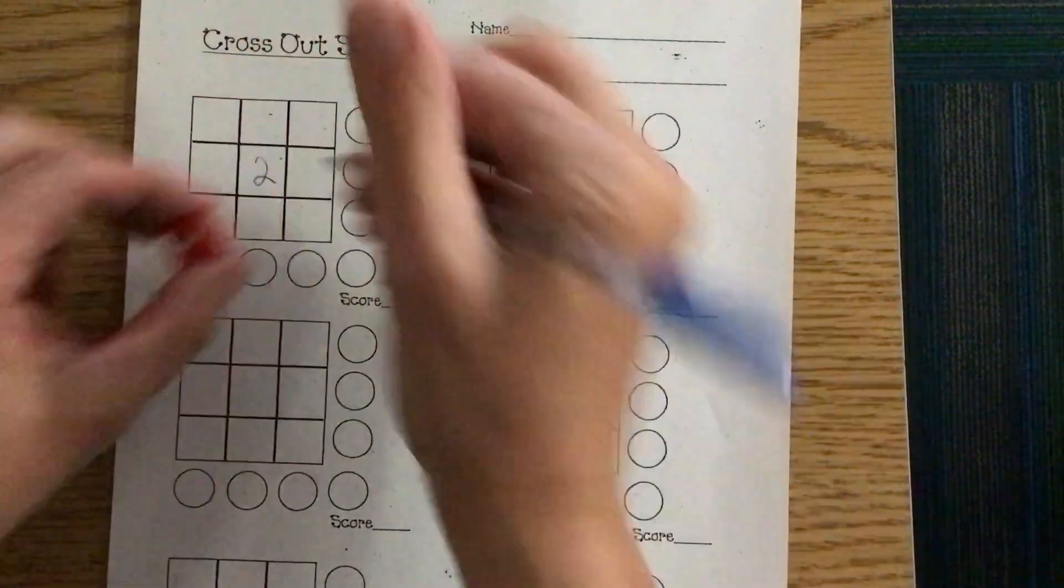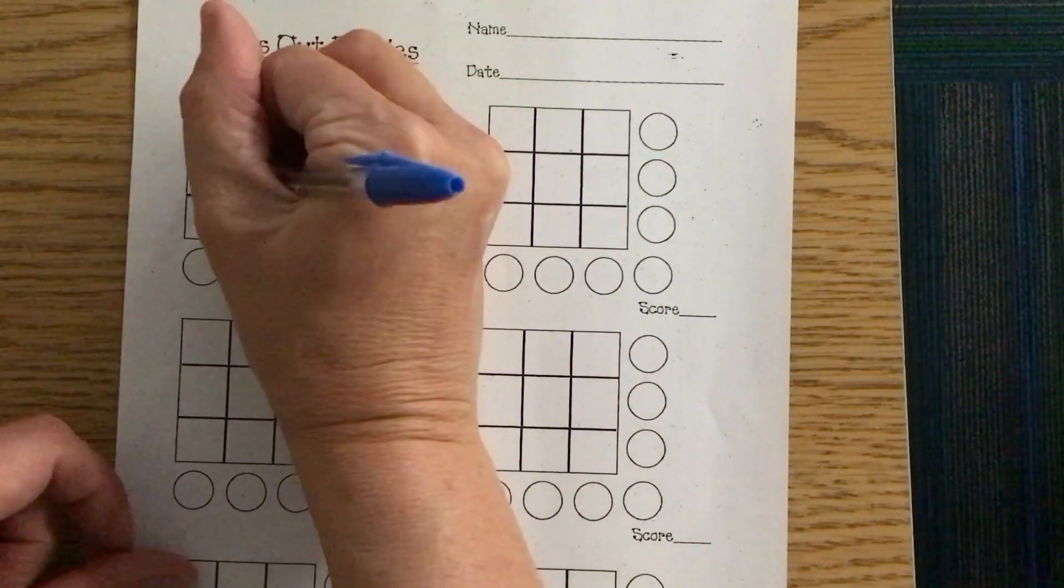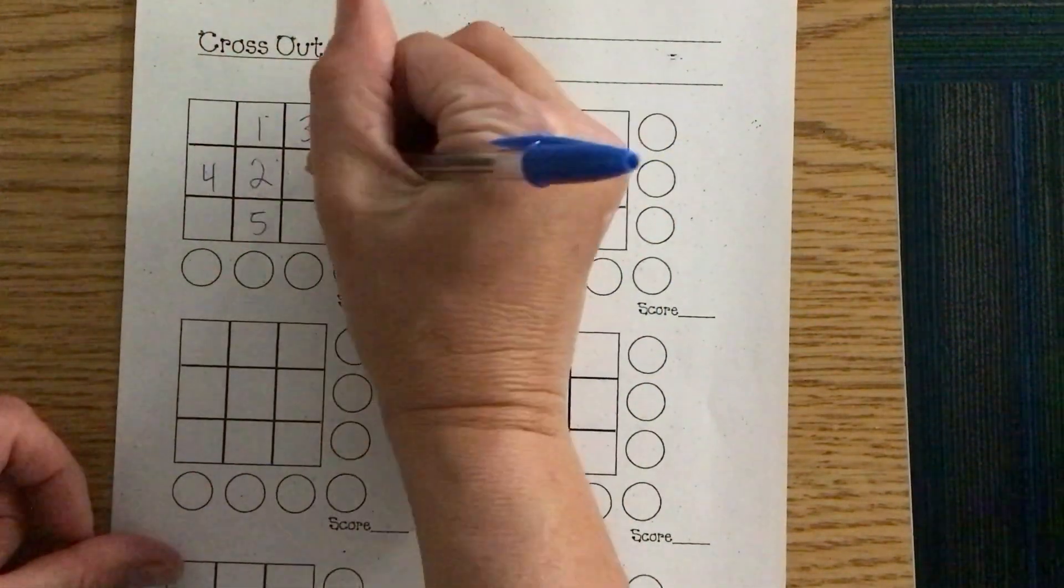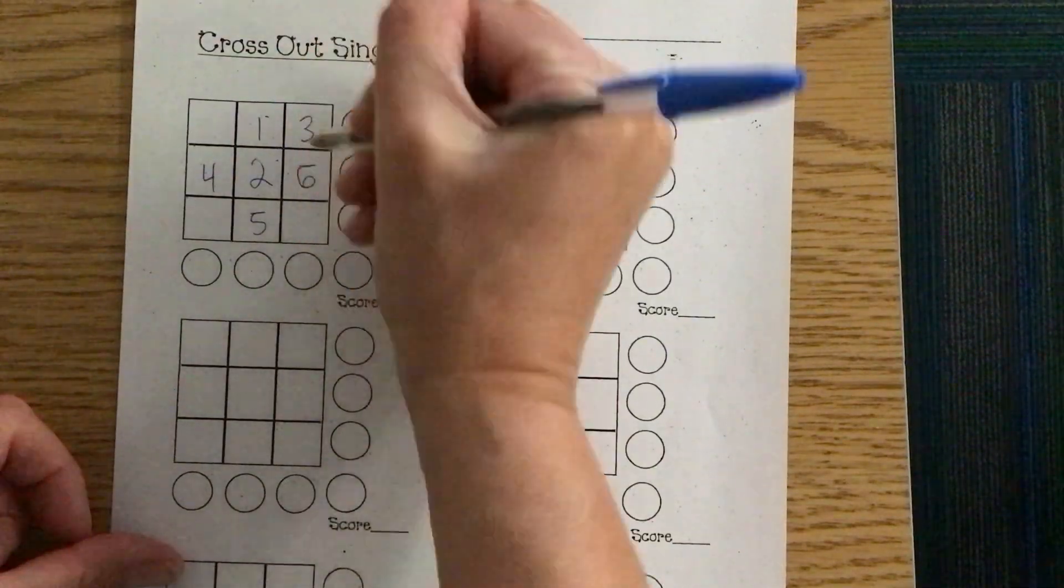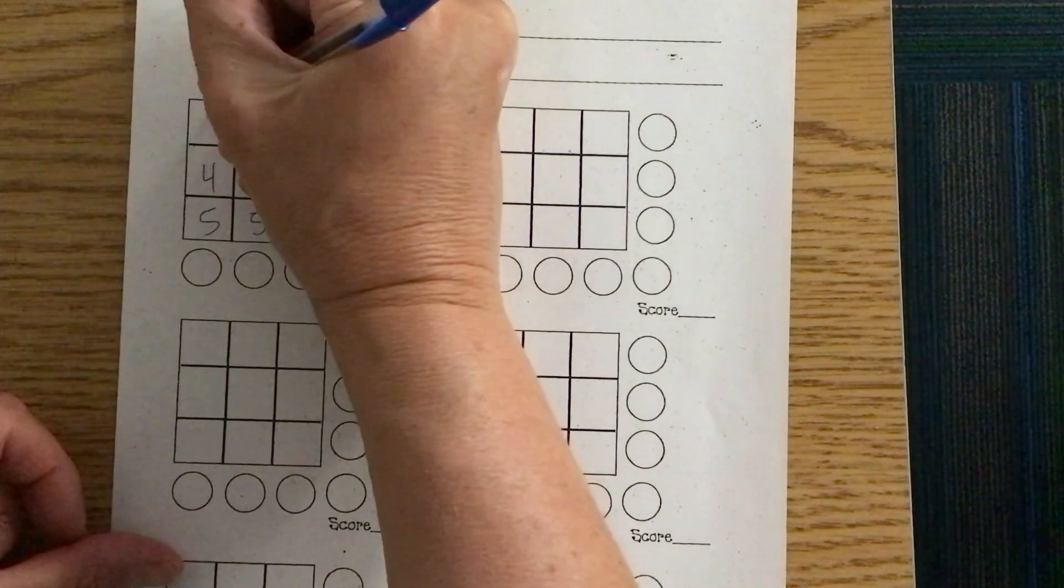You roll, keep rolling until you fill them all in, and when they're all filled in, your next job is to add all the numbers.